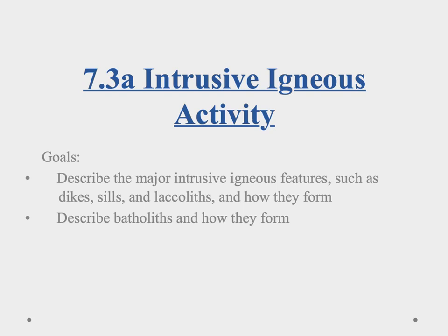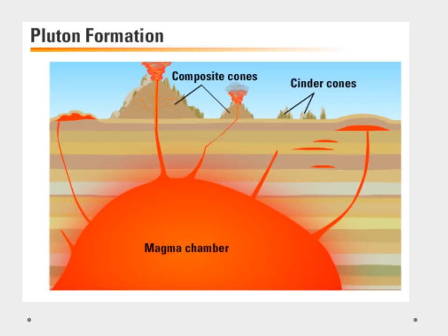Aloha and welcome to our video on intrusive igneous activity. In this video, we'll describe the major intrusive igneous features, and we'll also talk about batholiths. When we're talking about intrusive igneous activity, not the extrusive stuff — which we can see here as these explosions and volcanoes — intrusive features we call plutons. We're going to see a bunch of different varieties of those.